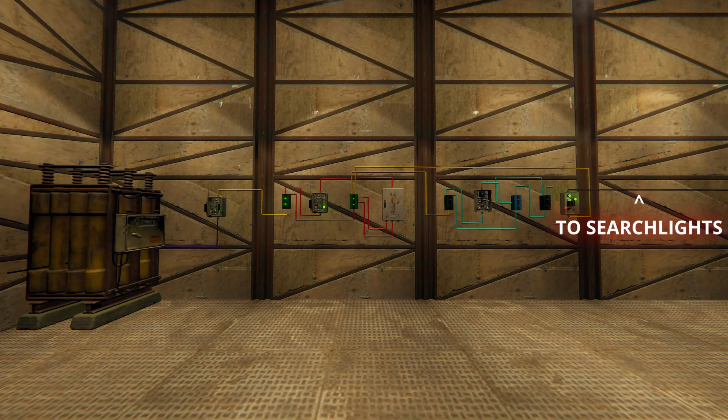Once you've placed those components, wire them like you see here, and then you're almost done. The last step is to connect the power out of the large battery to the power in of the timer, and set the timer to the minimum value, a quarter of a second, then reconnect both the timer and the battery as they were before.